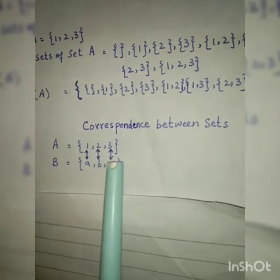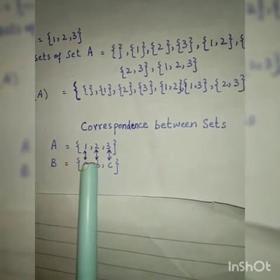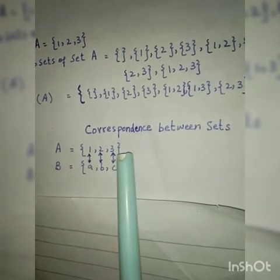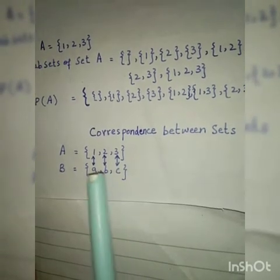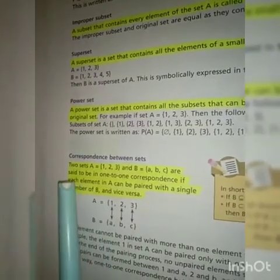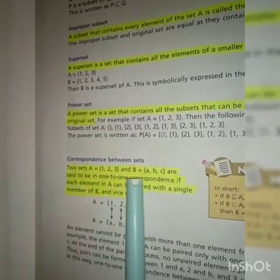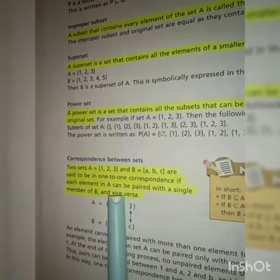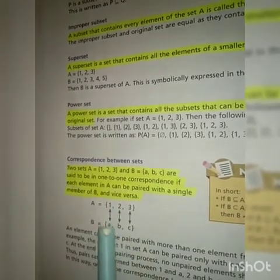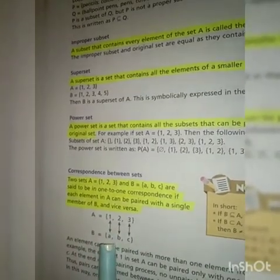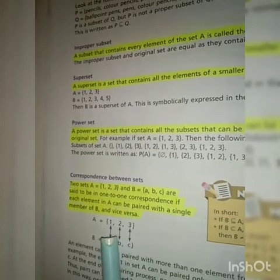یہ equivalent sets سے بھی relate کر سکتے ہیں جو آپ نے پڑھے تھے - اس میں بھی دونوں sets میں number of elements equal ہوتے ہیں۔ Definition highlight کریں: Two sets A and B are said to be in one-to-one correspondence if each element in A can be paired with a single member of B, and vice versa۔ یعنی آپ Set B کو Set A کے ساتھ بھی relate کر سکتے ہیں اور Set A کو Set B کے ساتھ بھی pair بنا سکتے ہیں۔